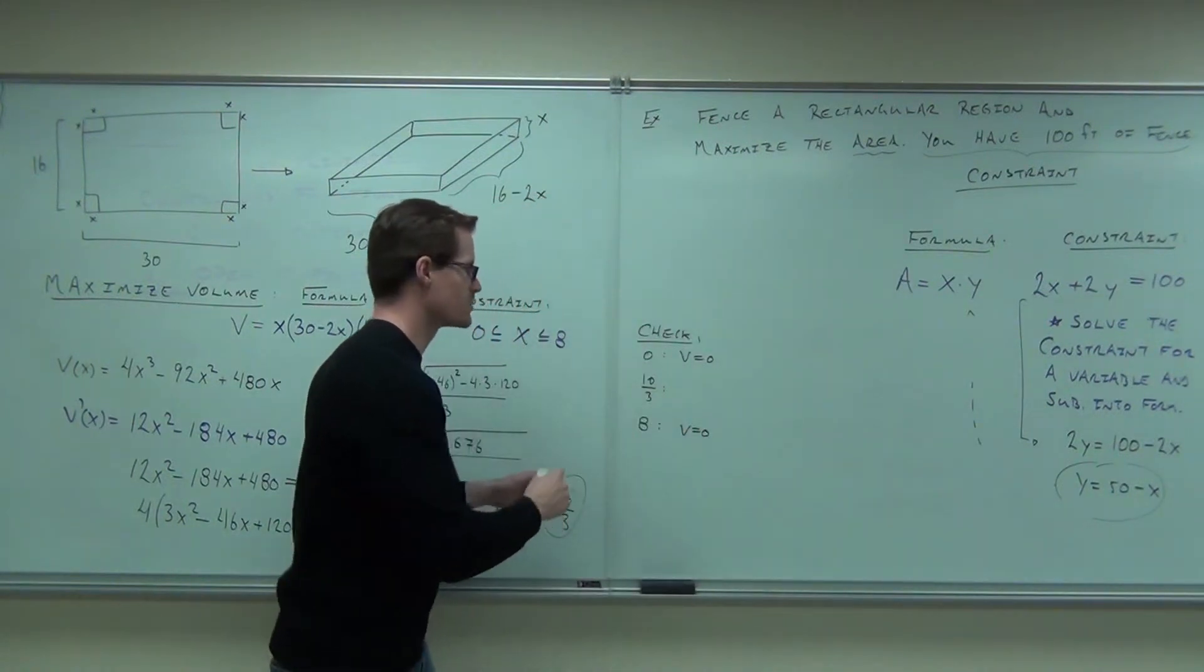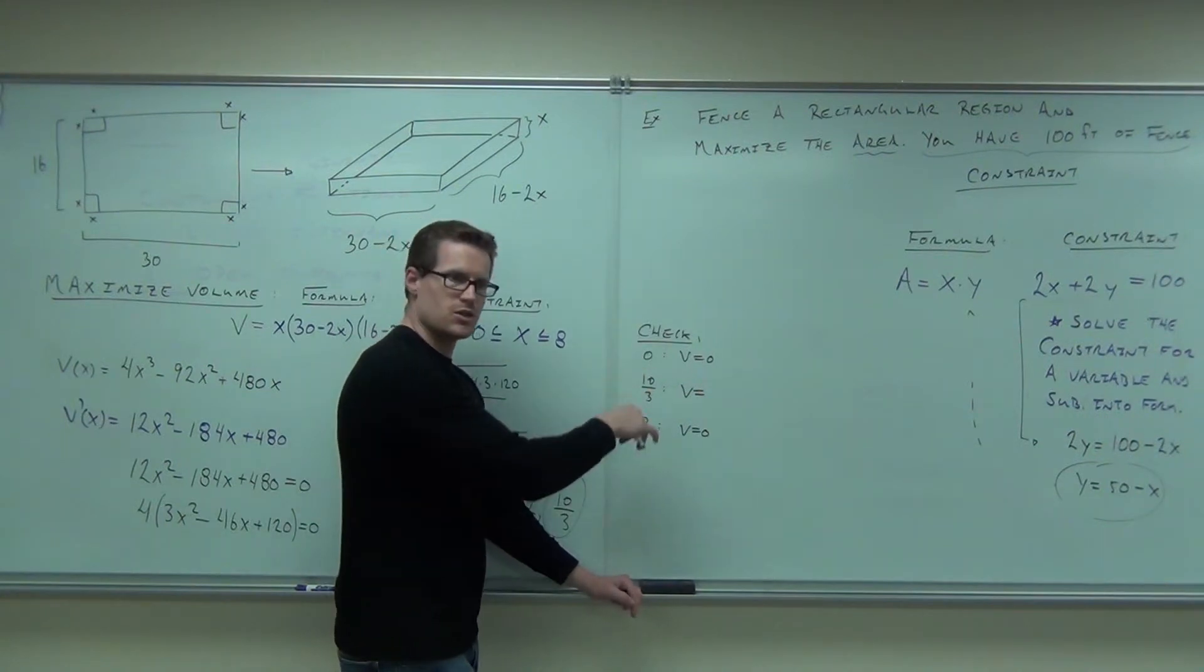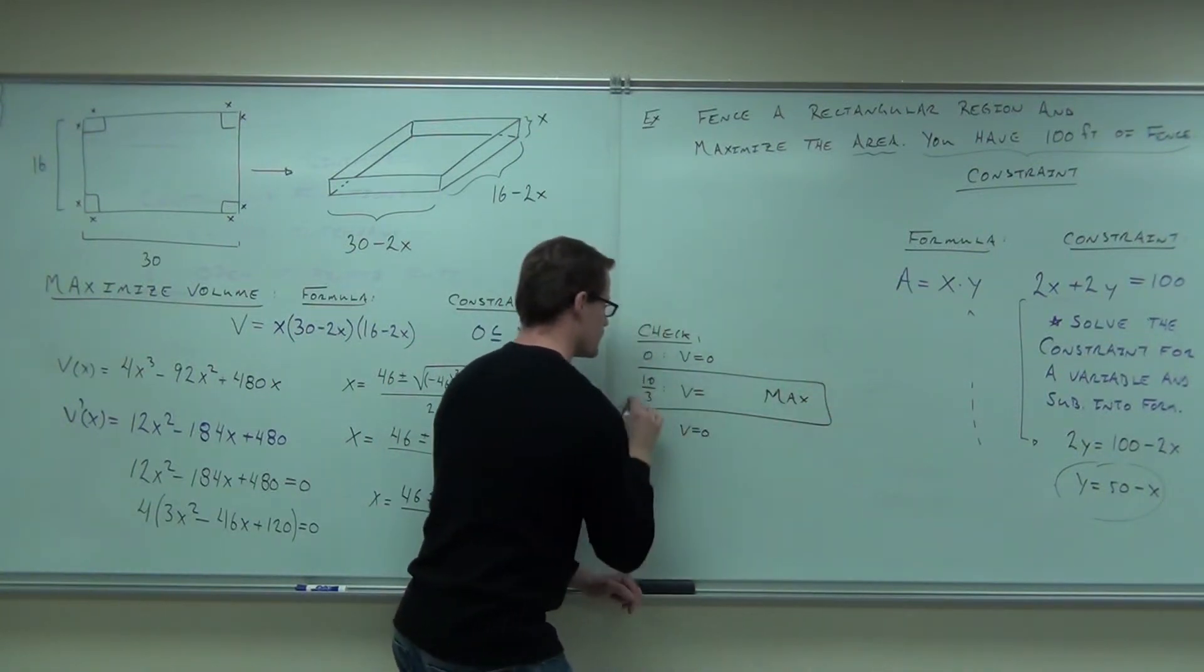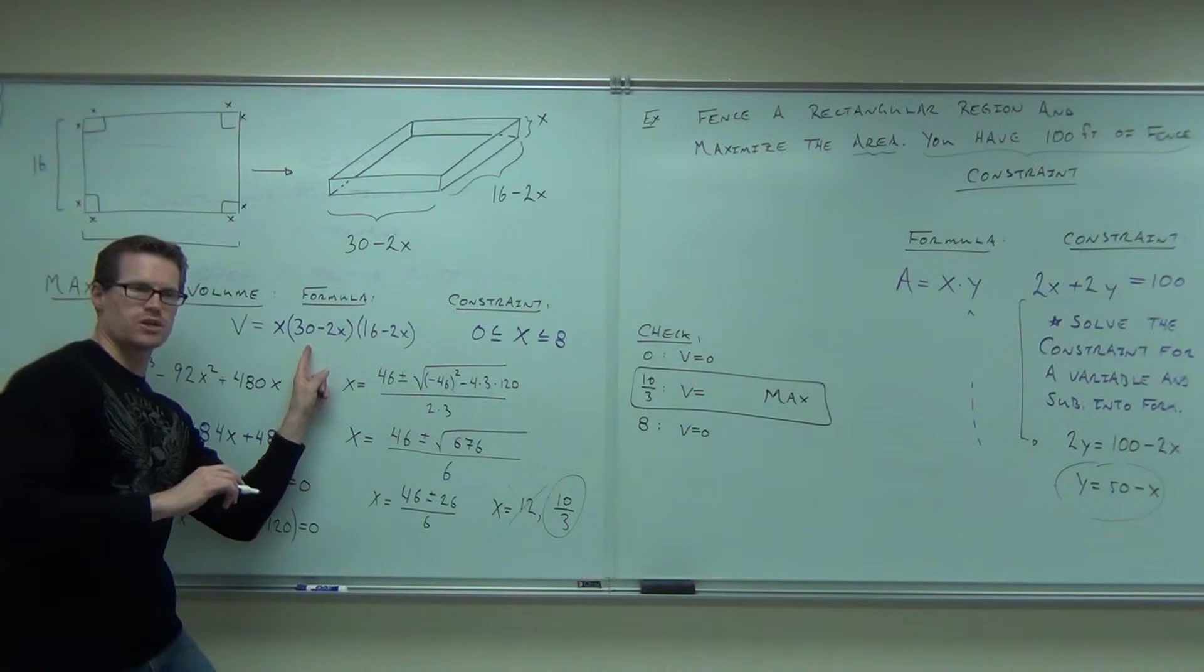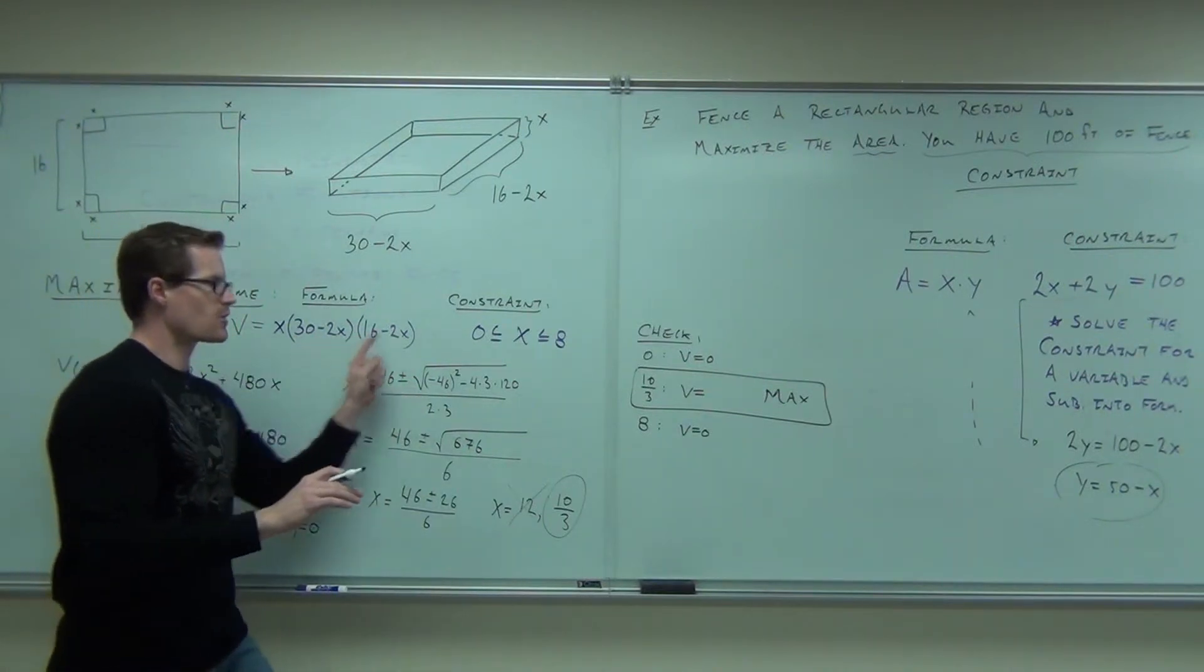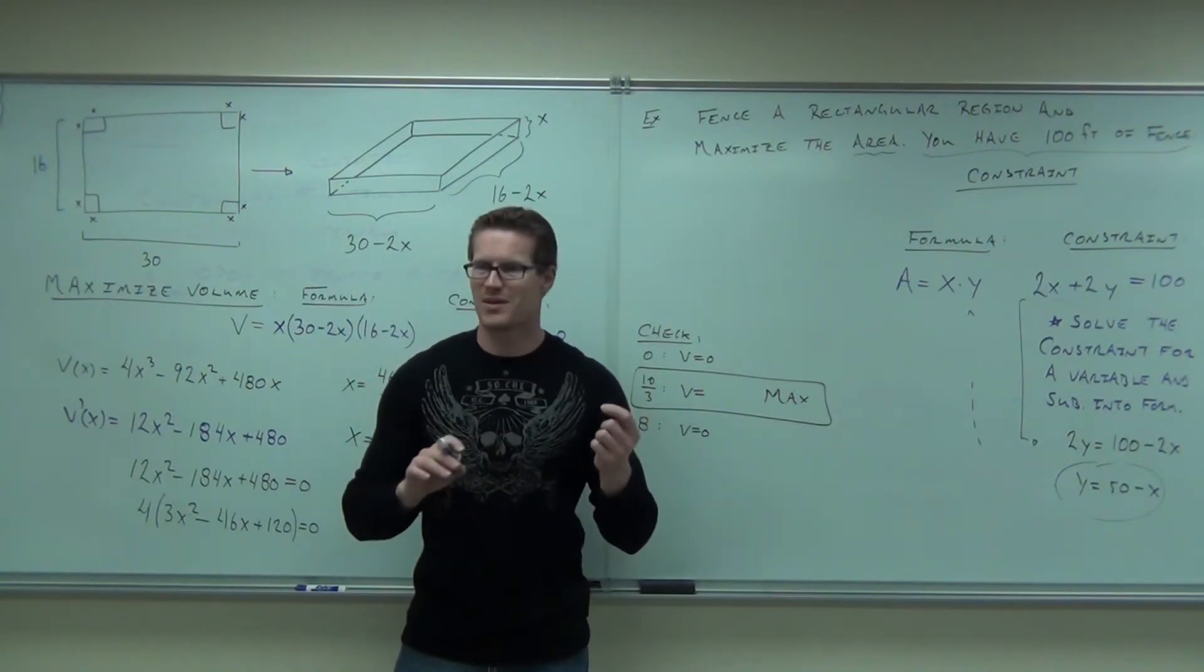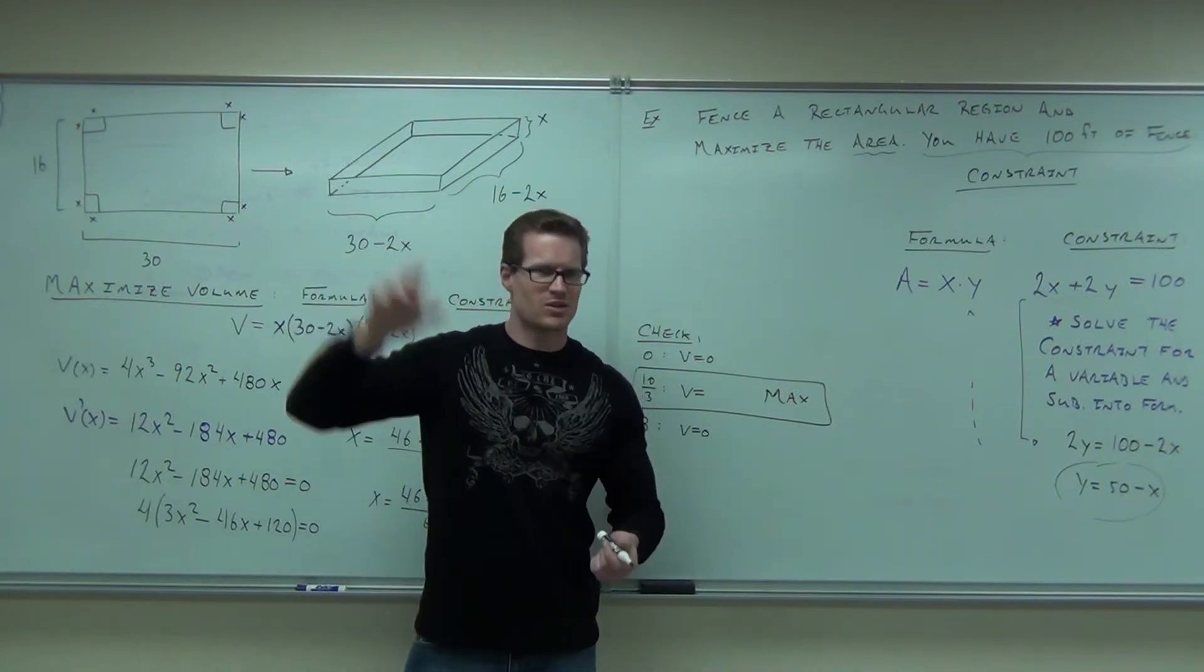The only one that could possibly work is 10 thirds. So what you would do, I'm not going to spend the time to do this, but you'd find out whatever volume, has anyone done that, the volume for that 10 thirds? If you do, what you do is you'd plug in your 10 thirds, you'd find your volume. Whatever this is, is your maximum. So the maximum volume would be plug in 10 thirds to your original volume function. Figure out what it is. I'm not going to have you do that right now. Do it on your own time. Figure out what that volume is, and that would be your maximum volume. It occurs at a cut of 3 and 1/3 inches. You follow me on that? 3 and 1/3 inches.